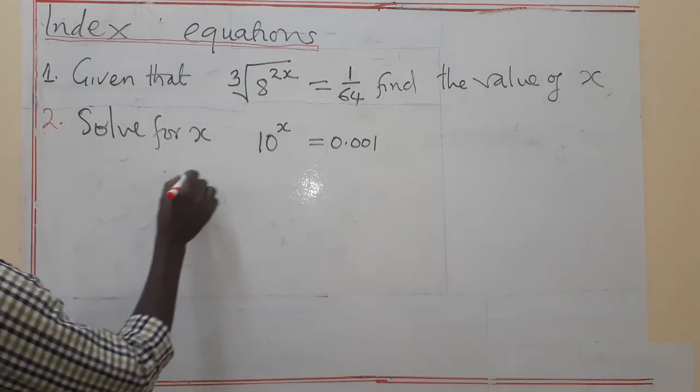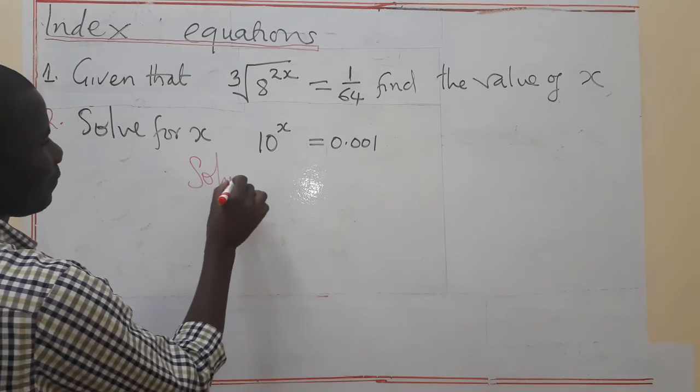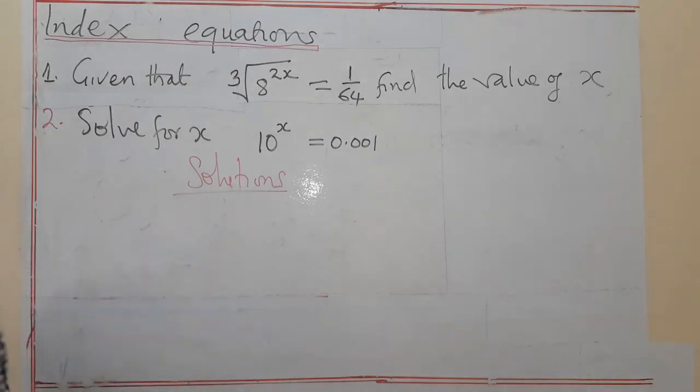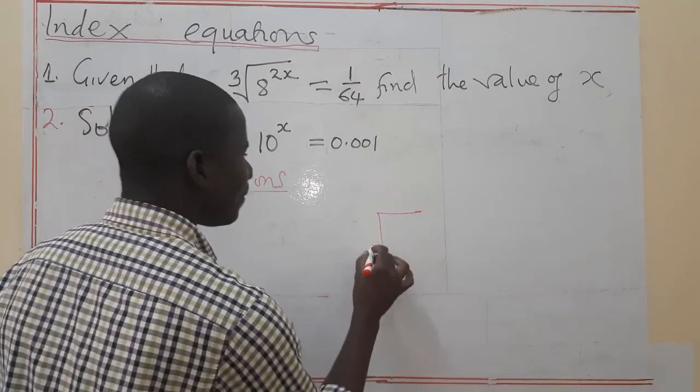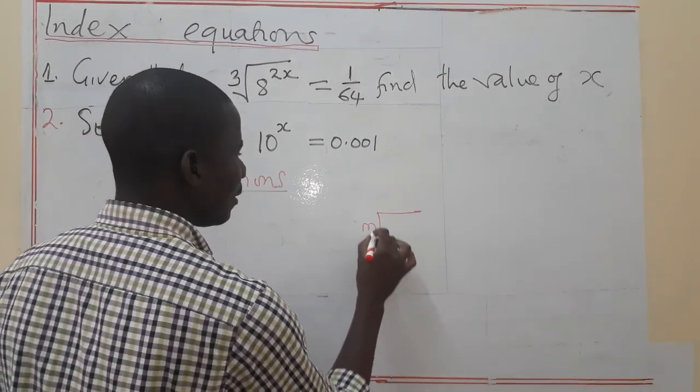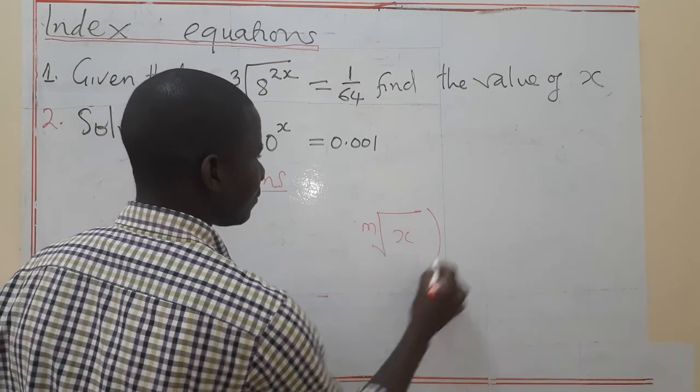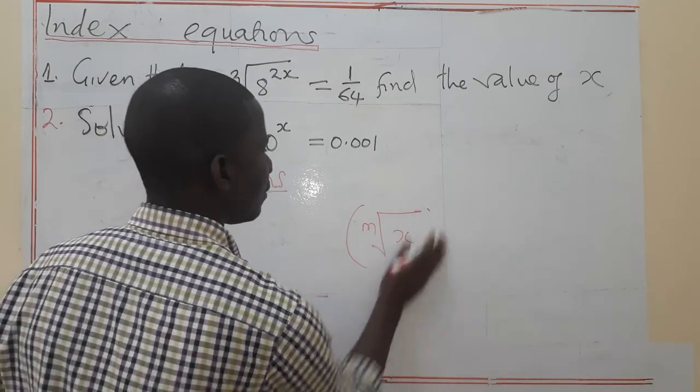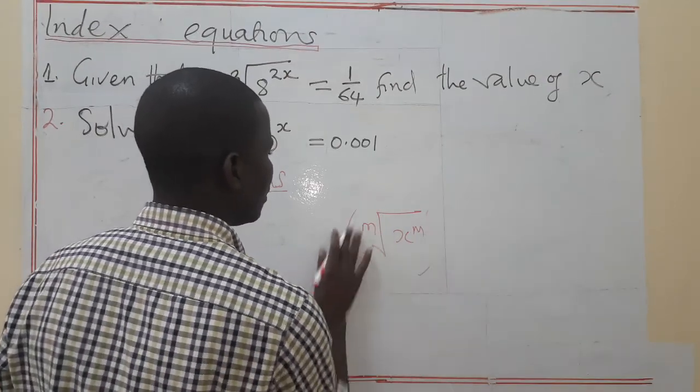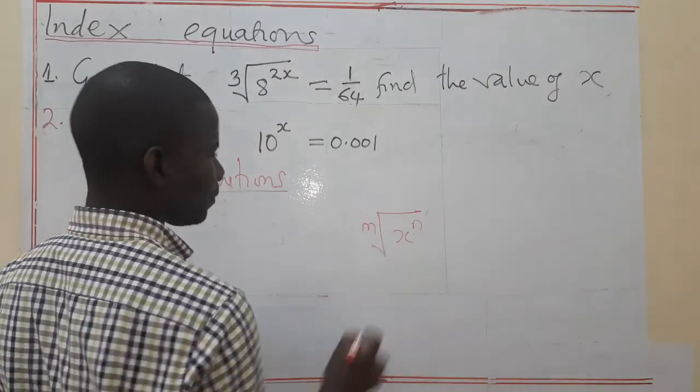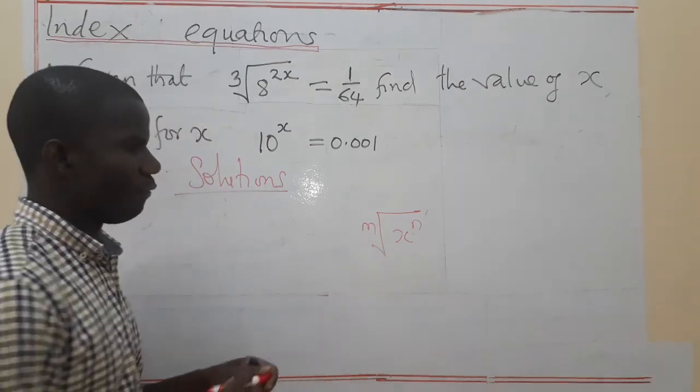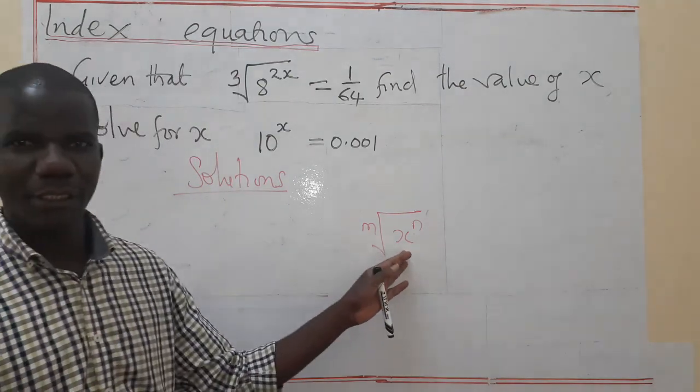How do we solve the first one? So from this, let's solve it like this. When you are given something in this form, when you are given an expression in this form, you are supposed to know that this...